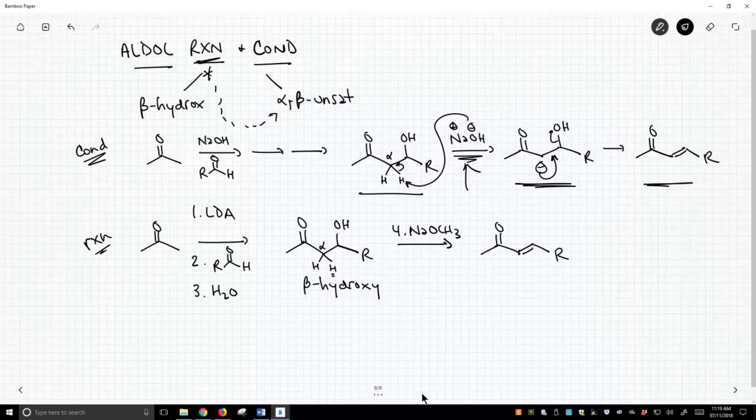So you can use the aldol reaction to ultimately get to the alpha-beta unsaturated ketone. You're going to have to add an extra step and simulate the presence of base in the aldol condensation reaction. But it can work. So just add a fourth step. Sometimes people will make their alpha-beta unsaturated ketones through the reaction and then add base at the end. It's totally fine. It gets you to the same place.